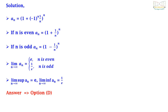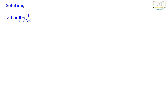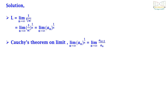Example 2: let l = lim_{n→∞} (n!)^{1/n}. The options are: (A) l = 0; (B) l = 1; (C) 0 < l < ∞; (D) l = ∞. This question was asked in CSIR NET December 2016 Part B. Solution: here l = lim_{n→∞} (n!)^{1/n}, which equals lim_{n→∞} a_n^{1/n}.